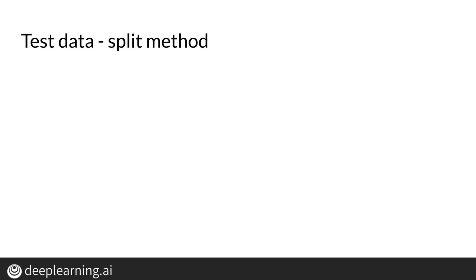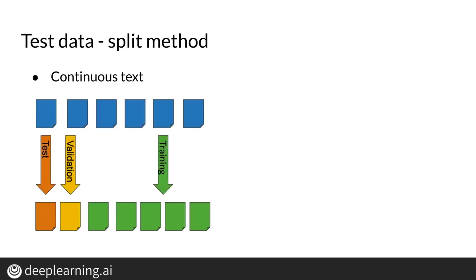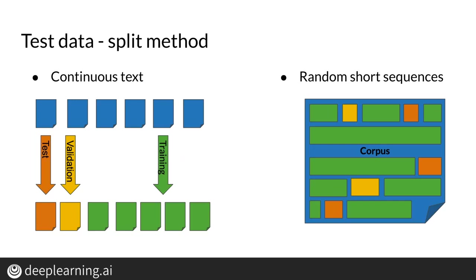In NLP, there are two main methods for splitting. You can split the corpus by choosing longer continuous segments like Wikipedia articles, or you can randomly choose short sequences of words, such as those in the sentences.